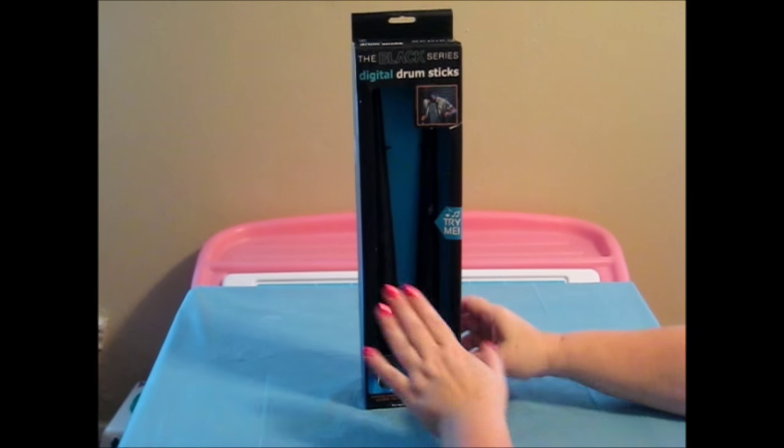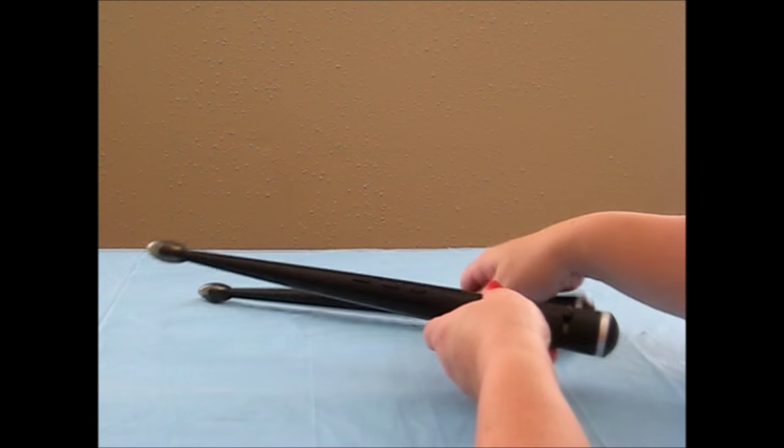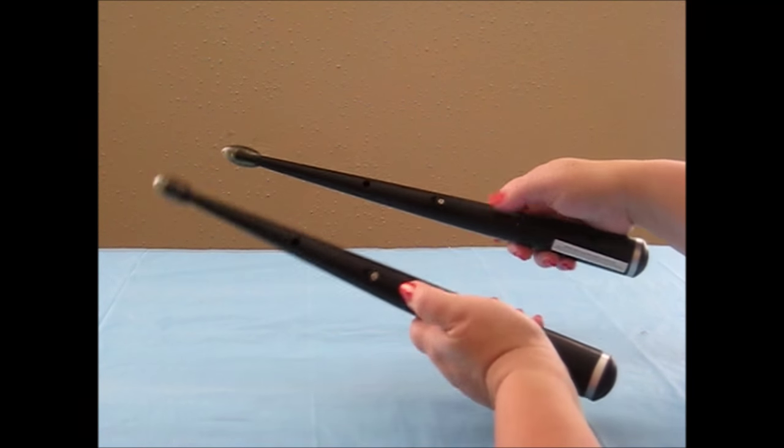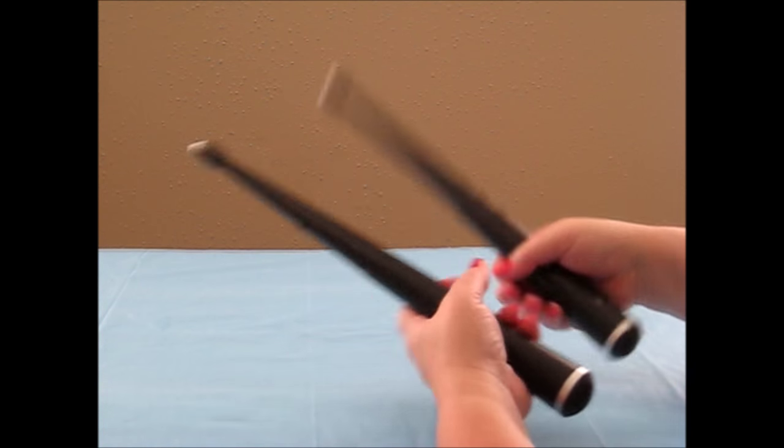So let's take them out and give them a try. Okay, I've removed the digital drumsticks and they're ready to play. I've inserted two AA batteries into each stick. They go on the back and you'll need a crosshead screwdriver to accomplish this.